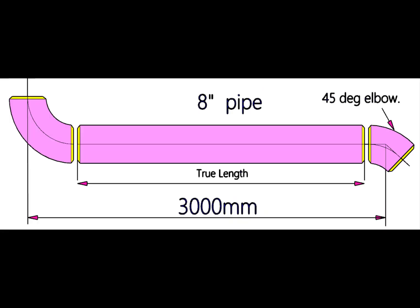Let us try another example. This piping have an 8 inch, 90 degree long radius elbow and 45 degree elbow.